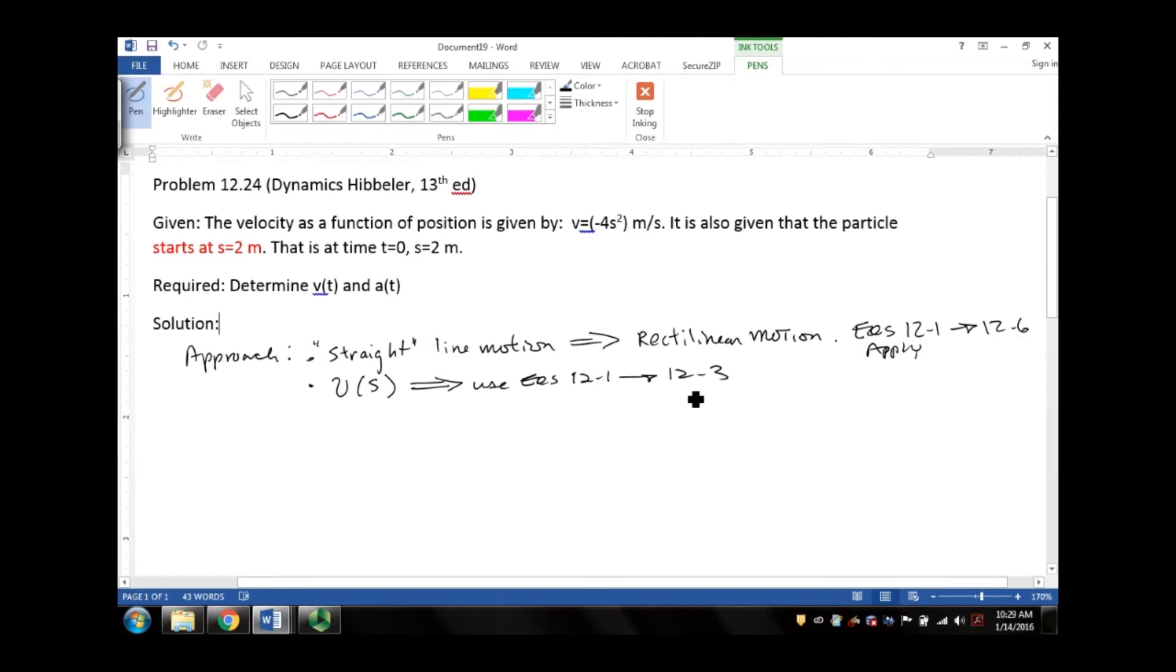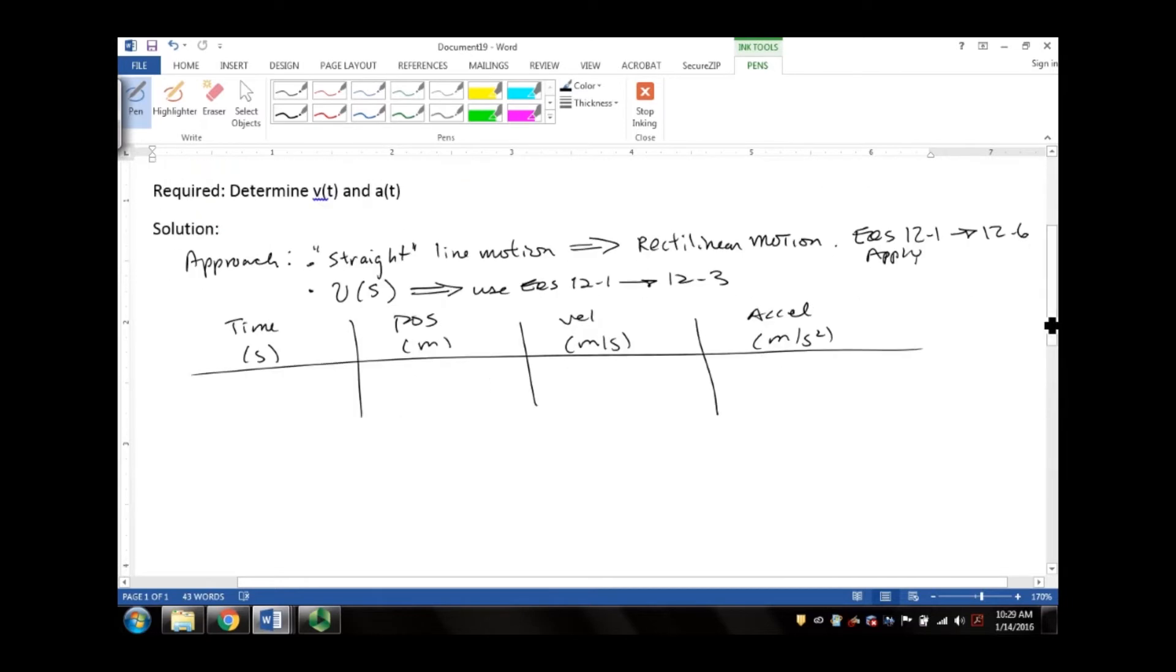So let's first create a table of all our knowns and unknowns: time, position, velocity, and acceleration. Here we have seconds, meters, meters per second, and meters per second squared. So at time t₀ equals zero, our s₀ is equal to two meters.